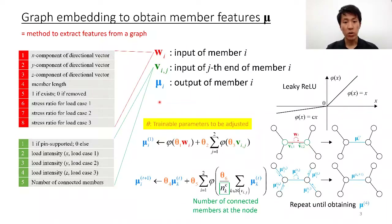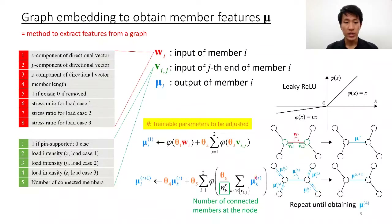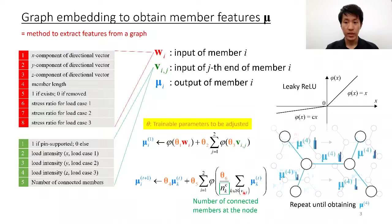Mu is a vector considering limited local information around the member at first, but by iteratively aggregating neighbor inputs and features, mu becomes a feature vector that can consider neighbor nodes and edges. Here, theta 1 to theta 6 are the parameters to be adjusted during training. The important property of mu is that the size of vector mu is the same for all members. Here we chose 100 as the size of mu.